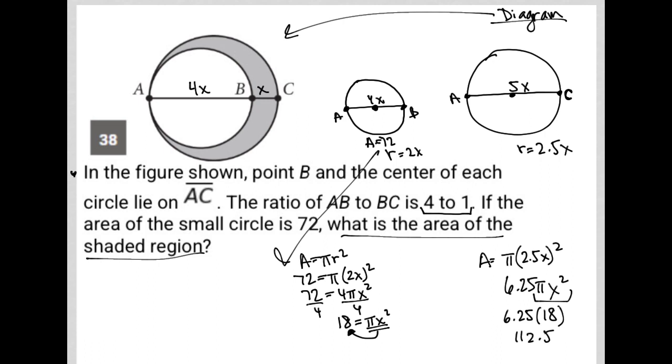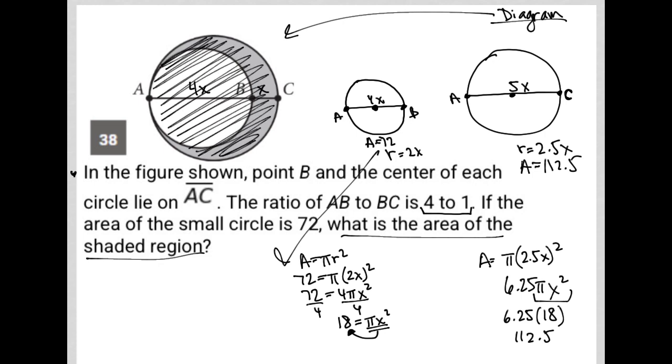So I expect my area here to be 112.5. Now the rest is pretty simple, right? Because if the area of the entire circle, if I pretend like the entire large circle is shaded, is 112.5.